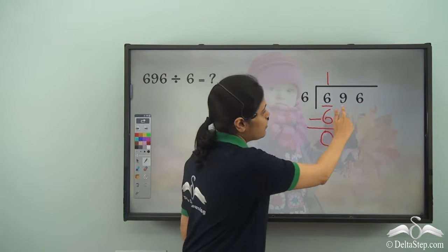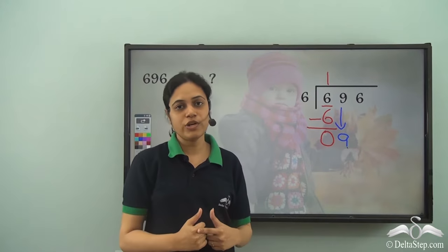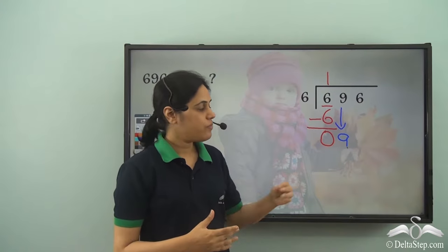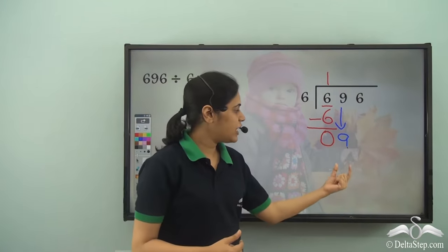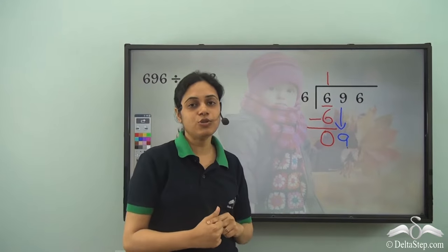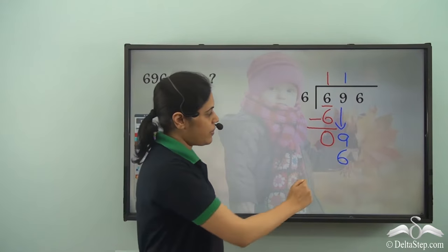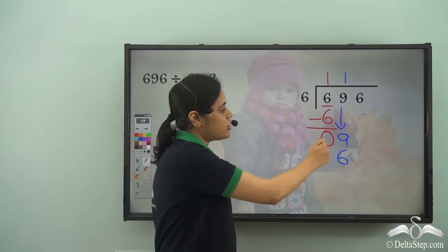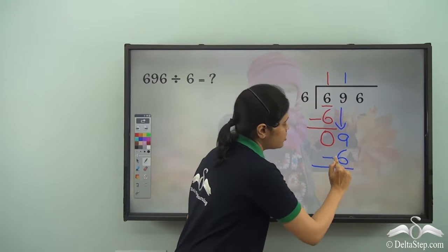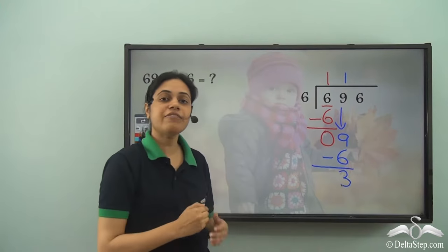Now I go to the next digit which is 9. I bring it down. How many times does 6 go into 9? 6 into 2 is 12, but 12 is bigger than 9, so I cannot have that. 6 into 1 is 6, but 9 is more than 6, so it is not completely divided. I still have 3 which is left to be divided.